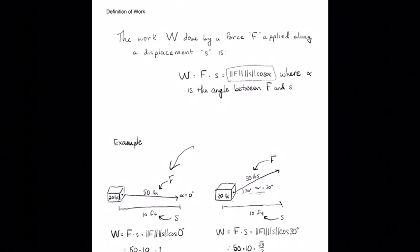In case one, where force is parallel to displacement, α = 0 degrees and cosine of 0 is 1, so work is simply 50 × 10 = 500 foot-pounds. In case two, the force is still 50 pounds and displacement is still 10 feet, but we multiply by cosine of 30, which is √3/2. So work = 50 × 10 × (√3/2) ≈ 433 foot-pounds. Adding a direction onto the force that isn't parallel to the displacement reduces the amount of work being done.